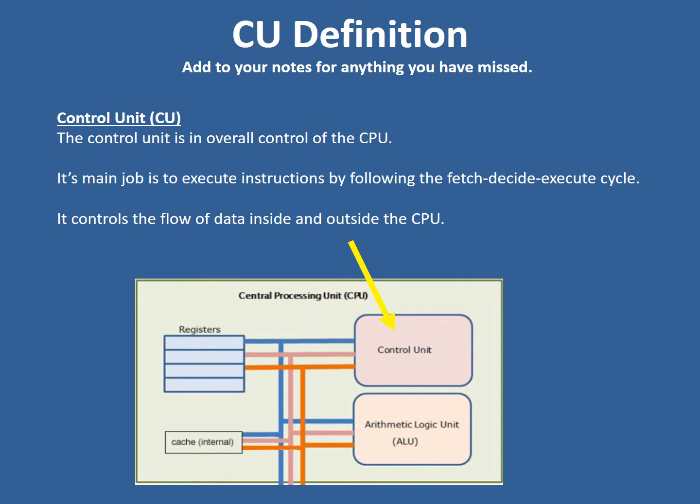The control unit is in overall control of the CPU. It executes instructions — that's its main purpose — and controls the flow of data in and out of the CPU.